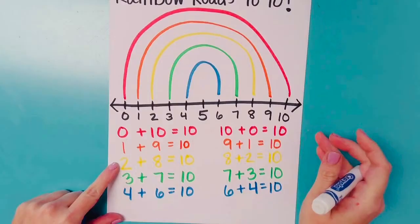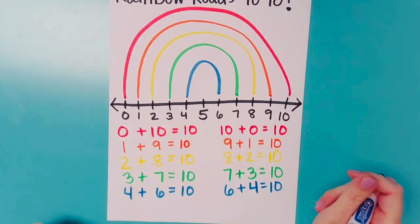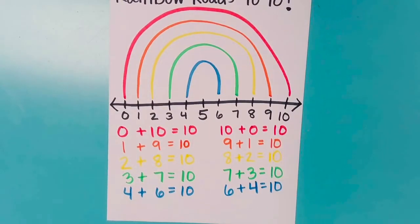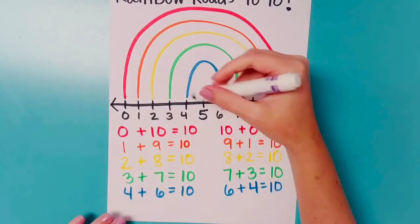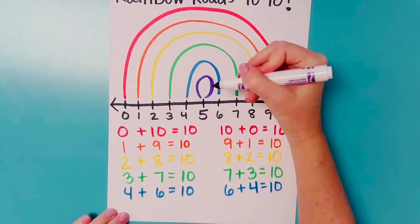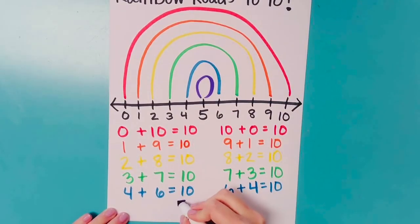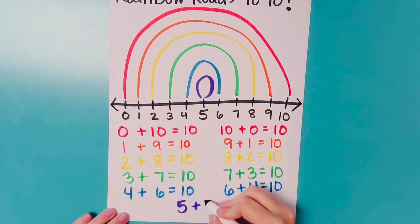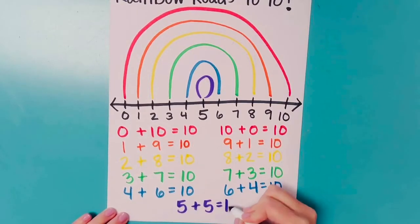Are we finished? We still have 5. What do you add to 5 to get to 10? 5 plus 5 equals 10.